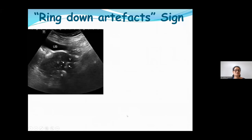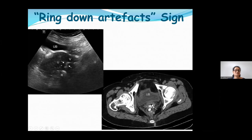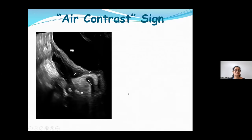Ring-down artifacts: some gas-containing fistulas show irregular tracts of discontinuous hyperechoic foci with posterior ring-down artifacts. When ring-down artifacts are seen between two adjacent structures with indistinct fat planes or cleavage planes, you should suspect a fistula. Here, with a partially distended urinary bladder, uterus, vagina, and rectum, a rectovaginal fistula is confirmed on CT. Ring-down artifacts are an important clue to look for.